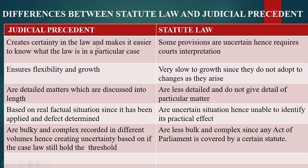Judicial President creates certainty in the Rho and makes it easier to know who the Rho is in a particular case, where Stuntitude Rho some provisions are uncertain hence requires good interpretation. Judicial President ensures flexibility and growth, where Stuntitude they are very slow to grow since they do not adapt to changes as they arise, as they involve a lot of formalities before they become Rho.